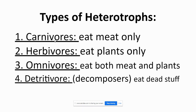There are four different types of heterotrophs. Carnivores eat meat only — think of a carnivore pizza with lots of meat. Herbivores eat plants only — 'herb' relates to plants. Omnivores eat both meat and plants — 'omni' means both. And detritivores are the decomposers that eat dead stuff. You probably learned about carnivores, herbivores, and omnivores in elementary school.